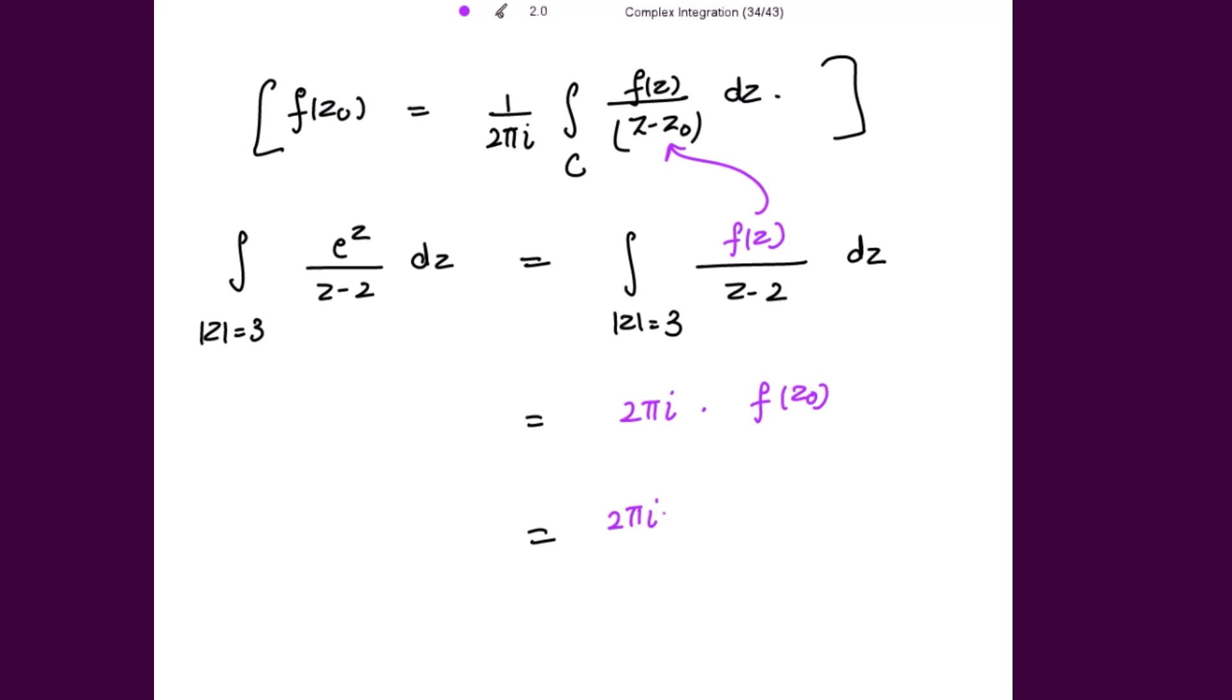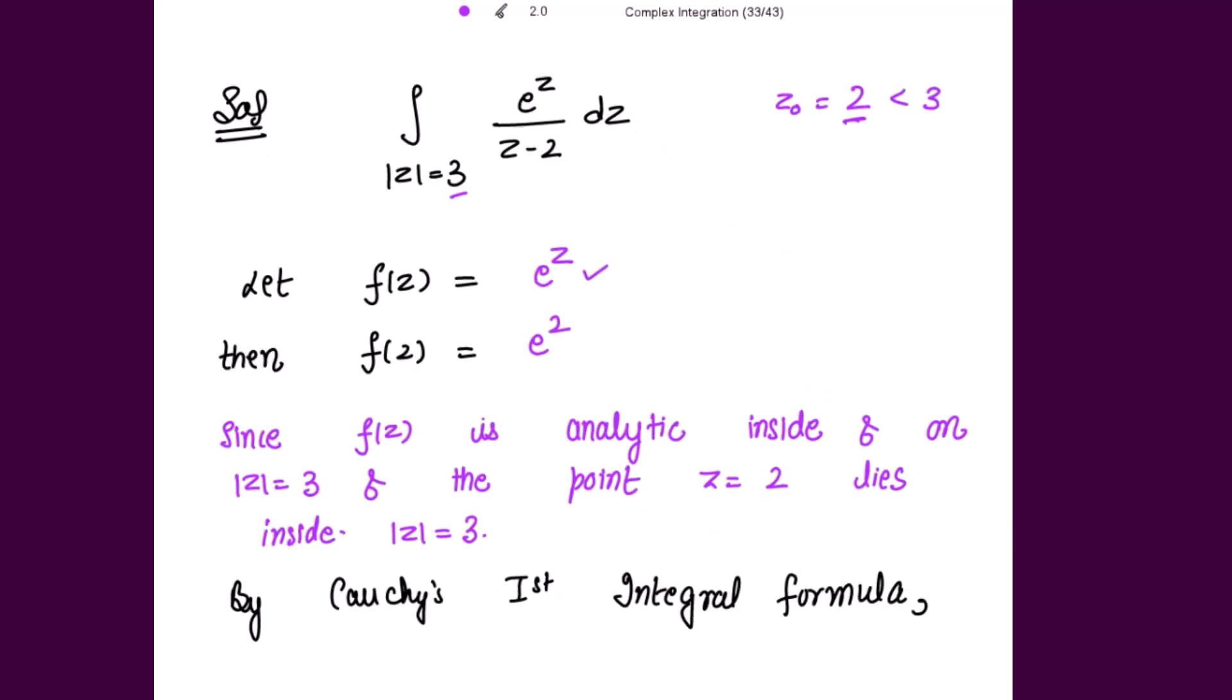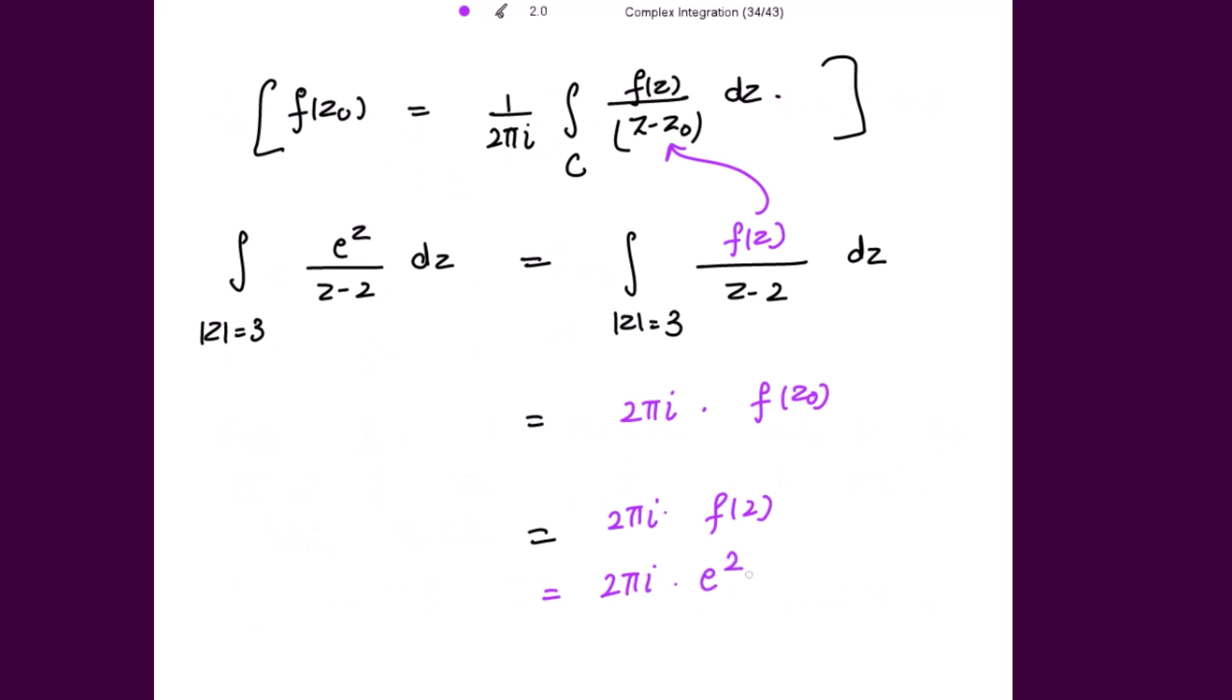So this is 2πi·f(2) and we have calculated this value, that is 2πi times what is f(2). It is e^2, so this is e^2.